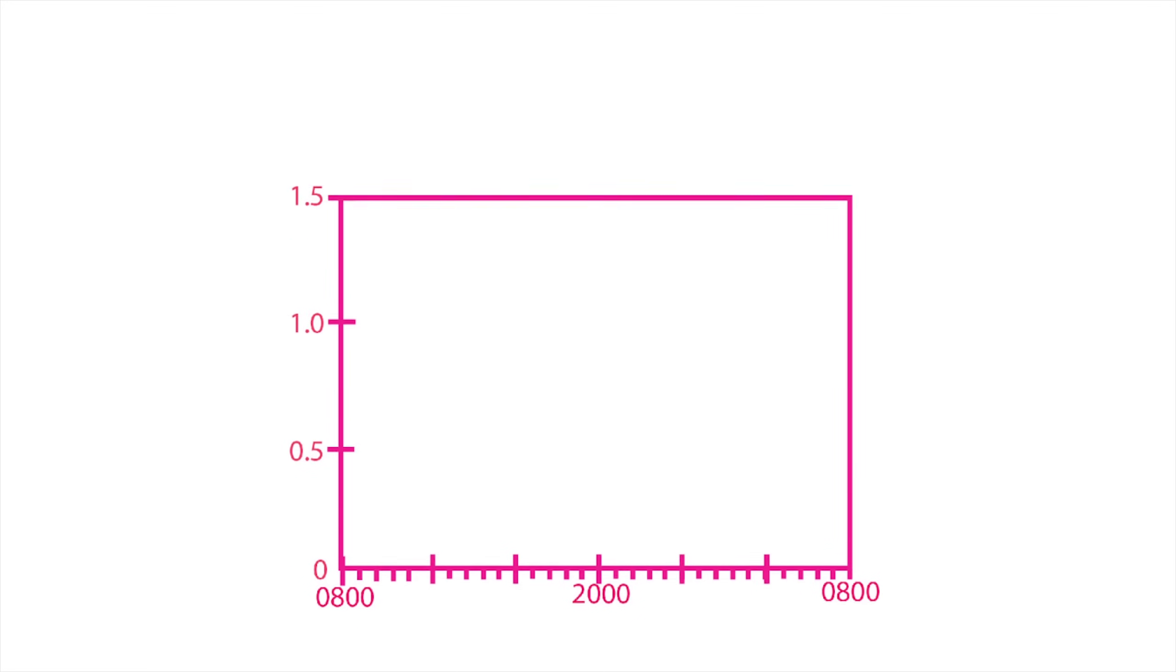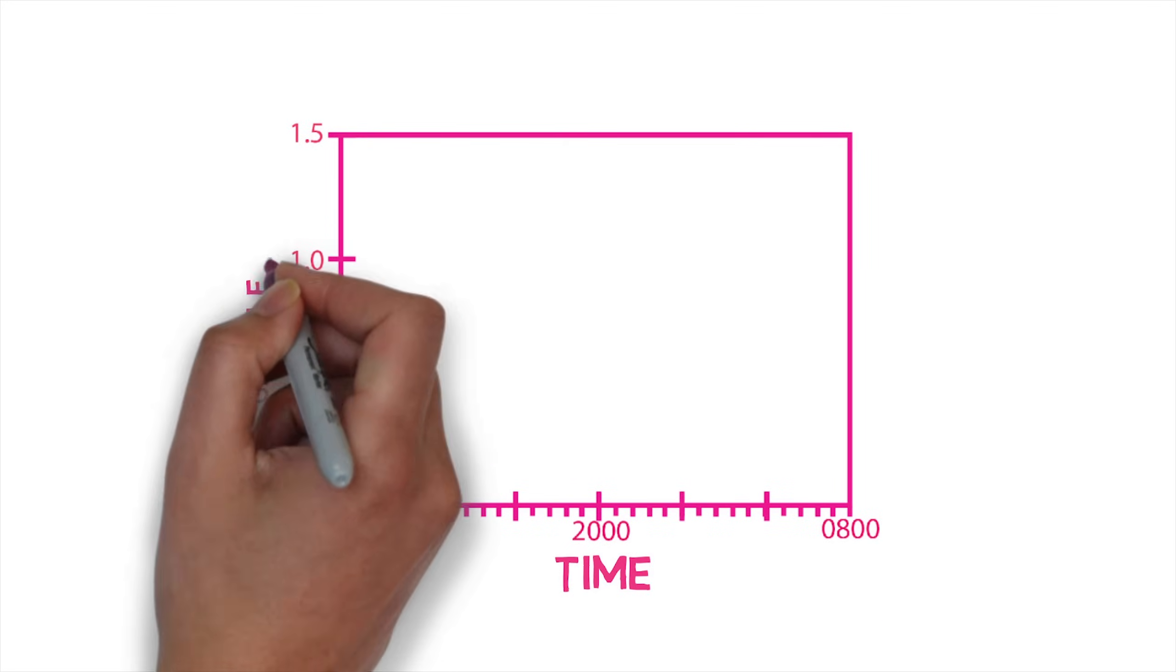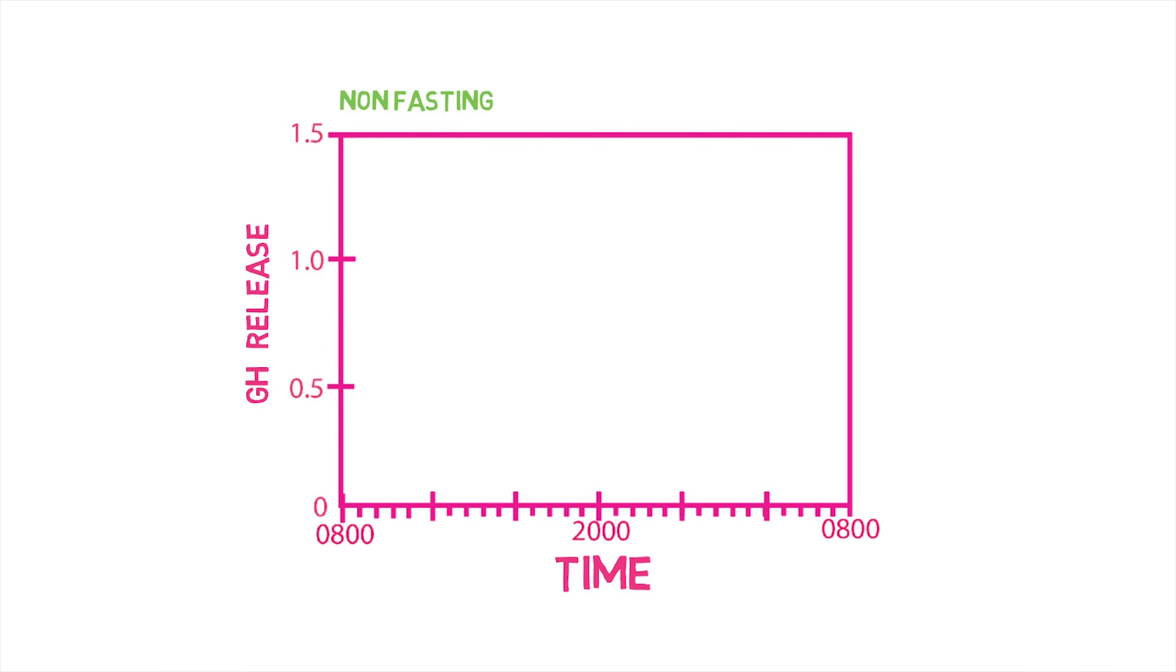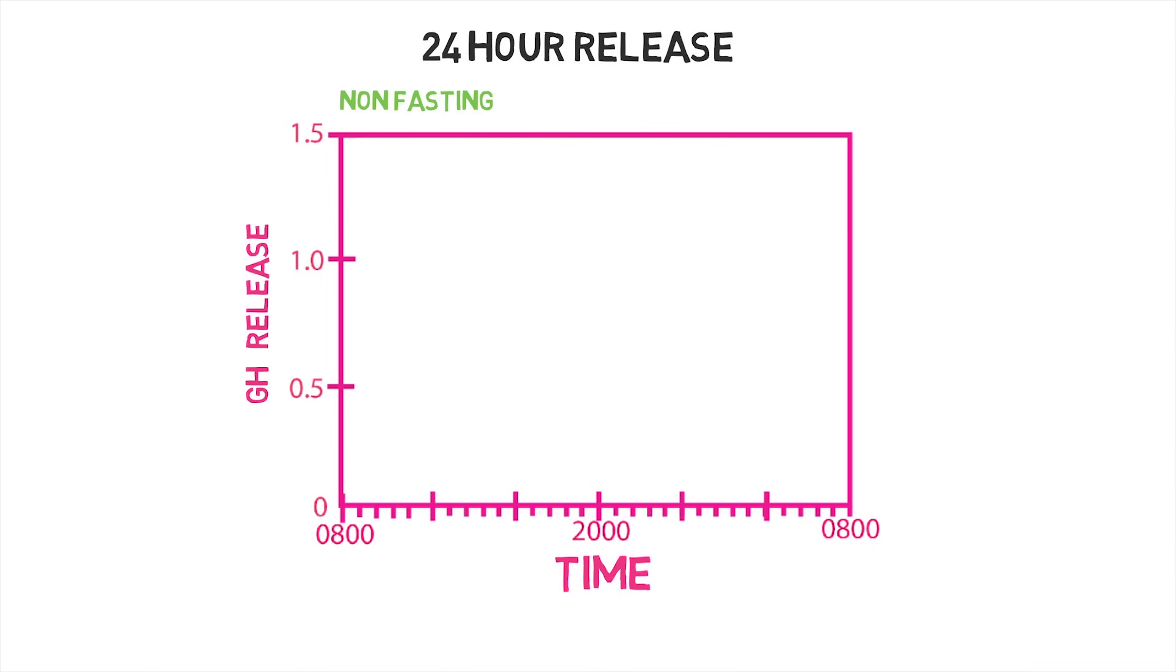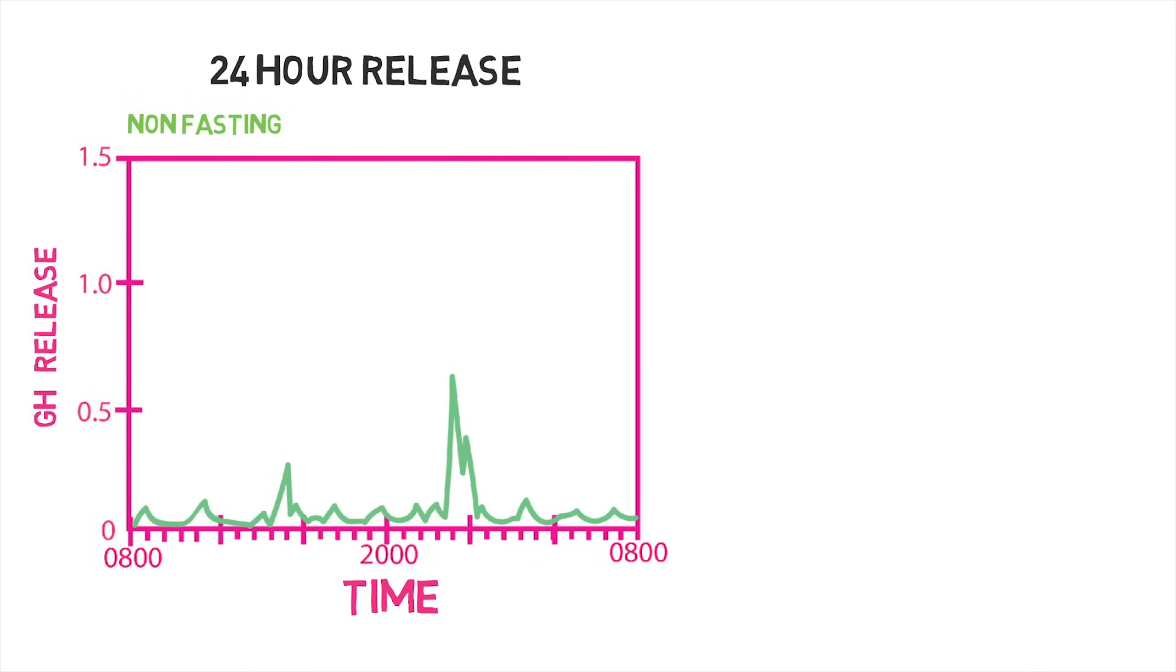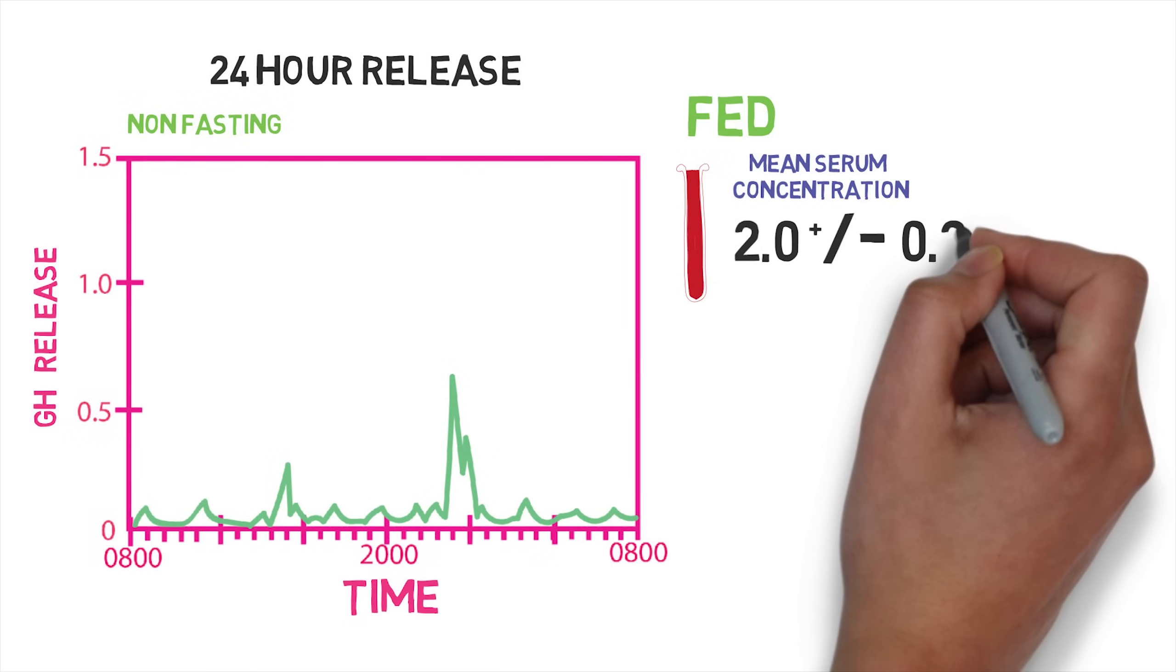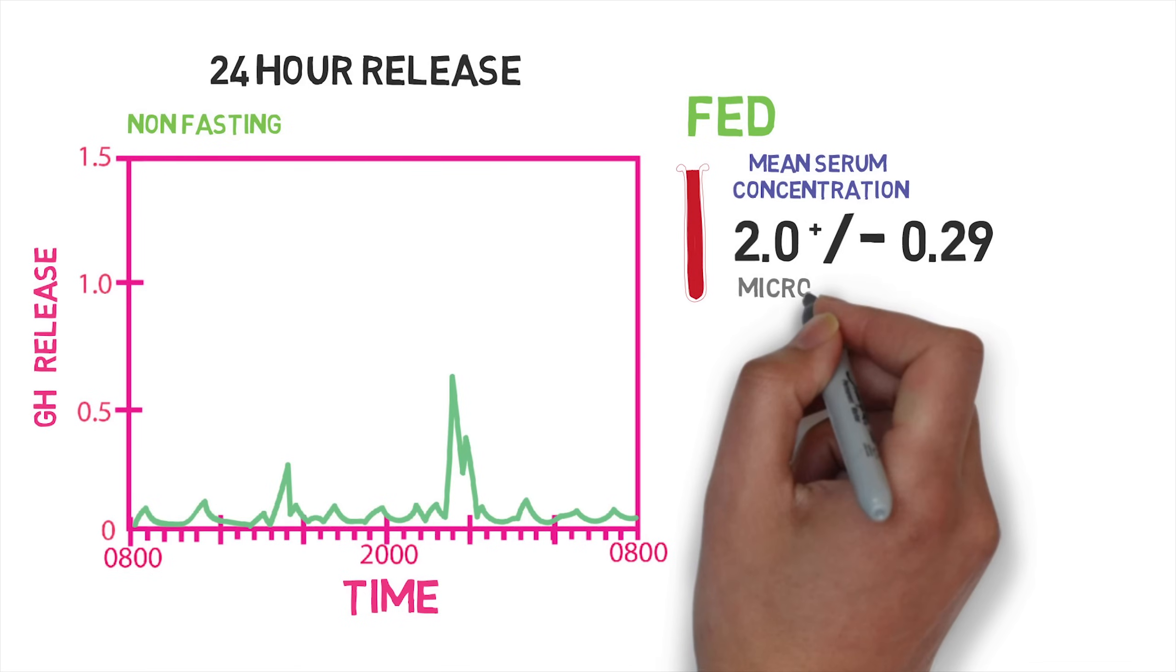The result is small blips of growth hormone being released throughout the day into the bloodstream. What makes it even more difficult to study, though, is once released, growth hormone doesn't stick around very long. The half-life is quite short. In this study, the average half-life of growth hormone in the blood was just 18 minutes. The researchers had to check the subject's blood every five minutes to be sure they were catching all the little blips that were released before they would disappear. Across the 24 hours, the mean serum concentrations of growth hormone in the blood of well-fed subjects was about two micrograms. Levels over the day looked something like this.